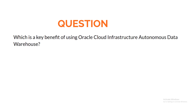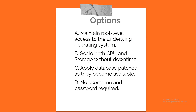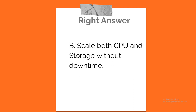Question. Which is a key benefit of using Oracle Cloud Infrastructure Autonomous Data Warehouse? A. Maintain root-level access to the underlying operating system. B. Scale both CPU and storage without downtime. C. Apply database patches as they become available. D. No username and password required. Correct answer: B. Scale both CPU and storage without downtime.